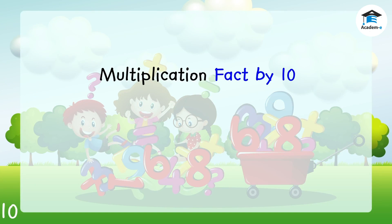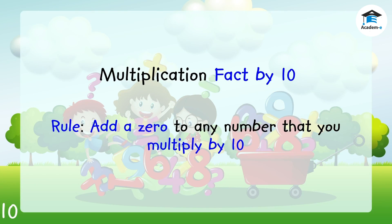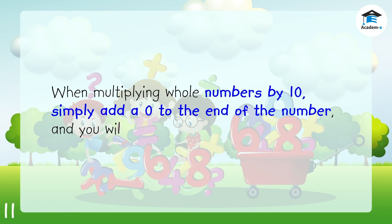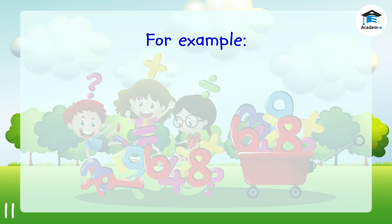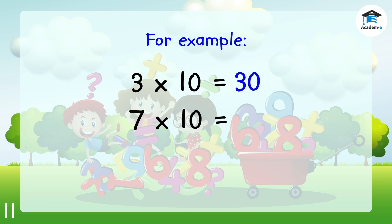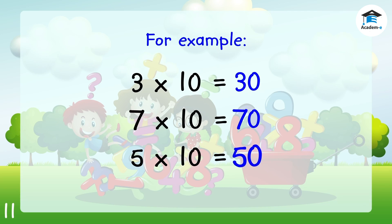To know the multiplication fact by 10, remember that the rule is to add a 0 to any number that you multiply by 10. When multiplying whole numbers by 10, simply add a 0 to the end of the number and you will have the answer. For example: 3 times 10 — copy 3 and then add 0, the answer is 30. 7 times 10 — copy 7 and then add 0, the answer is 70. 5 times 10 — copy 5 and then add 0, the answer is 50.